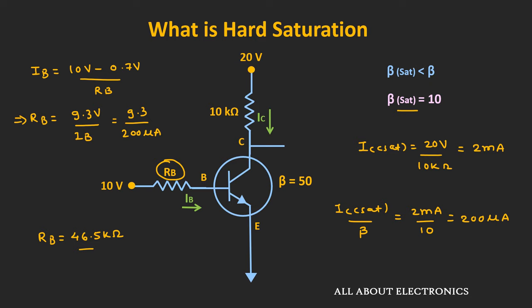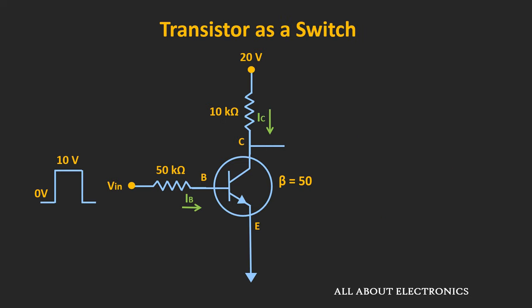By operating this transistor in the cutoff and the saturation region, it can be used as a switch. For that, a square wave pulse varying between 0 and 10V is applied to this transistor. Whenever the input is 0V, the transistor will operate in the cutoff region, because at that time the value of the base current Ib is equal to 0. And hence this collector current Ic is also approximately equal to 0mA. As Ic is equal to 0, there won't be any voltage drop across this 10kΩ resistor, and the voltage at this node is equal to 20V.